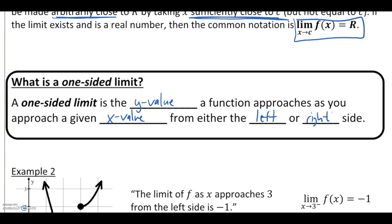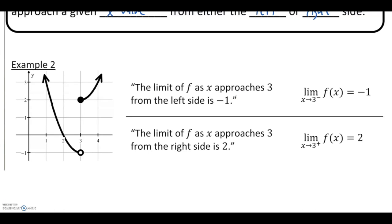In this example, the limit of f as x approaches 3 from the left side is negative 1. How we denote 'from the left side' — almost like an exponent — we take that number and raise it to a negative sign. Just make sure we're not reading that as negative 3; that is 3 from the left side. Looking at this function as we approach x = 3 from the left side, here's my x value of 3, and I'm only going to trace along the graph on the left side of that x value. Following that, my y values are getting very, very close to a y of negative 1.